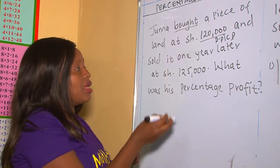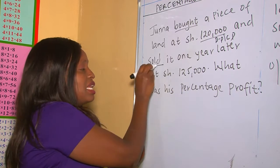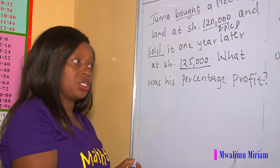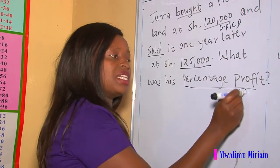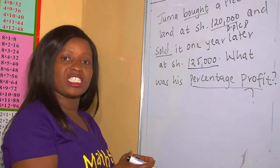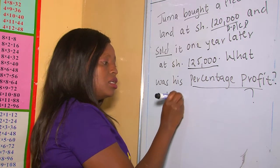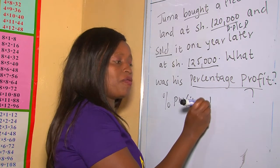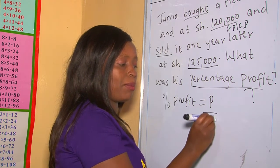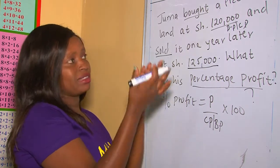You are also given the selling price — he sold it after one year for 125,000. And what we are looking for is the percentage profit. After analyzing the question, you write down the formula: percentage profit equals profit over cost price or buying price, multiplied by 100. Looking at the question, we don't have the profit, so we need to find it first.